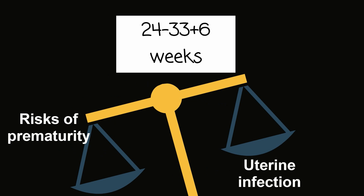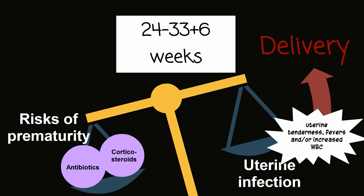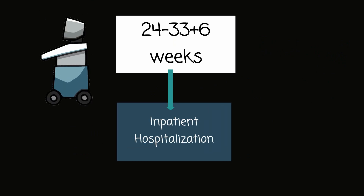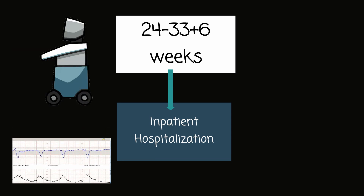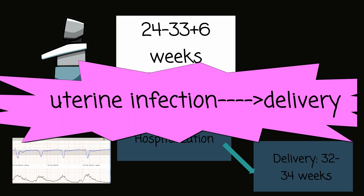If PPROM occurs between 24 weeks and 33 and 6 days, the risk of fetal lung immaturity from prematurity is very high, thus it is important to administer corticosteroids, which enhance fetal pulmonary maturity. Antibiotics are administered to increase the latency period — the time between rupture of membranes and spontaneous labor. Note this important point: antibiotics are administered because they have been shown to increase the amount of time before spontaneous labor; the antibiotics are not to treat an infection. If there is an infection present — diagnosed by uterine tenderness, fevers, and/or increased white blood cell count — then delivery needs to be initiated. Assuming no evidence of uterine infection, a patient with PPROM from 24 to 33 and 6 weeks estimated gestational age will be admitted for inpatient hospitalization with ultrasounds to assess amniotic fluid volume and antepartum testing such as non-stress tests. Delivery will be induced between 32 and 34 weeks. If the patient develops evidence of uterine infection, however, delivery will be immediately initiated.